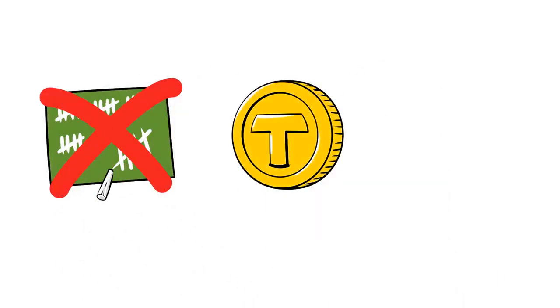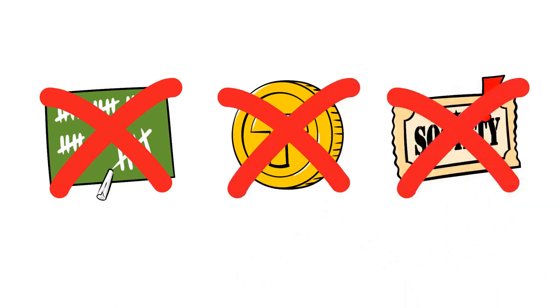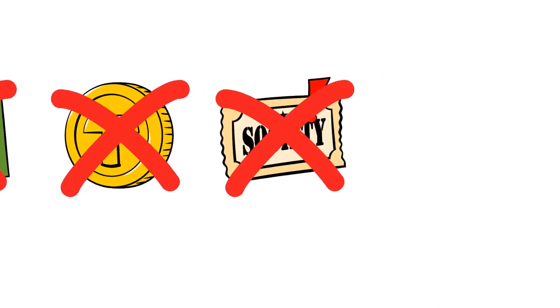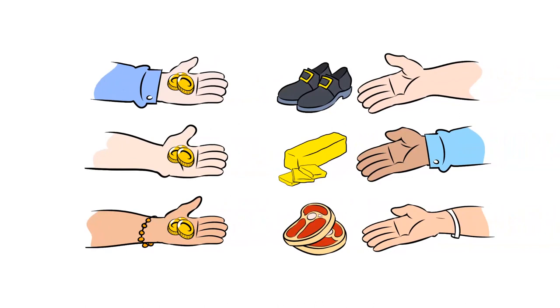As such, money did not begin as an abstract unit of account. It is not a useless token only good for exchanging. It is not a claim on society. It was simply a commodity. Like commodities, its price, in terms of other goods, is still determined by supply and demand today.